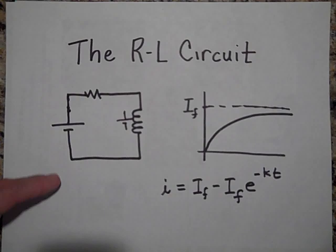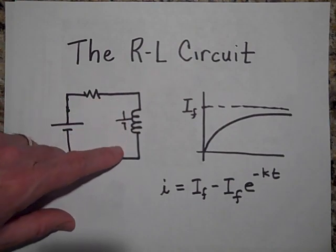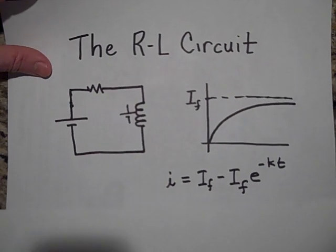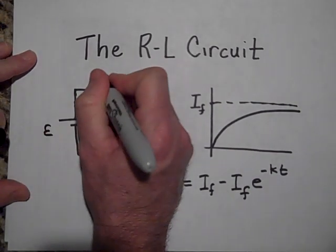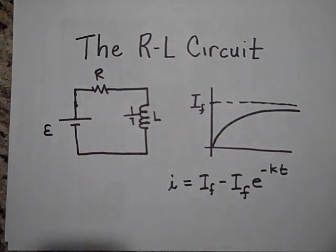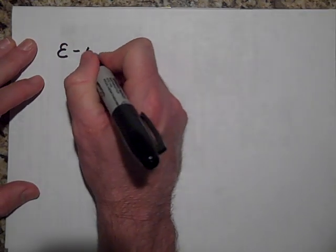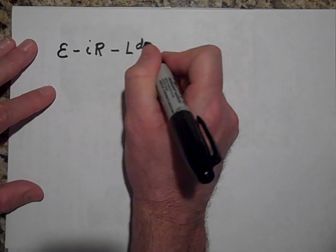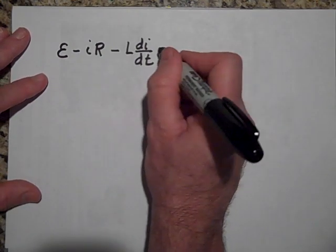Kirchhoff's loop rule says that when you go around the loop you must lose all your voltage. If I start here, I'm going to gain some voltage, then drop some voltage across the resistor, and drop some more across the inductor, and that total will equal zero. Let's call this E, this R, and that L. So at any given time Kirchhoff's loop rule gives us: EMF of the battery E, minus IR (voltage across the resistor), minus L·dI/dt (voltage across the inductor), equals zero.